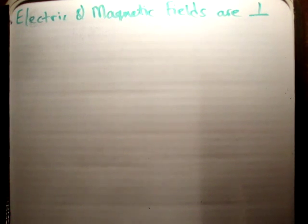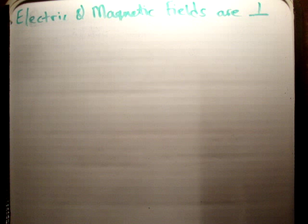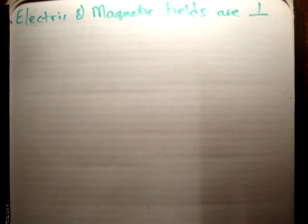In this video I'd like to show you how to prove that the electric and magnetic fields of an electromagnetic wave are perpendicular to the direction of propagation.